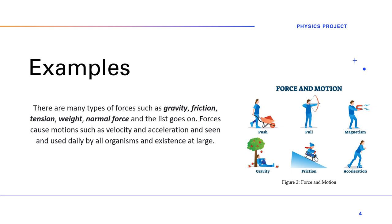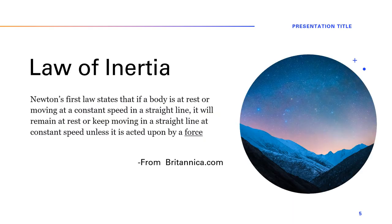Forces cause motion — that's what the diagram illustrates. When a force is applied to an object, it makes the object move. The diagram shows examples: pushing, pulling, a bow and arrow, using magnetic force to attract metals, gravity — a nod to Isaac Newton's discovery — friction shown with a kid sliding down with a sleigh, and acceleration. Motion causes velocity, speed, and acceleration, and we see this in our daily lives.